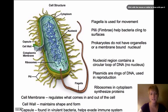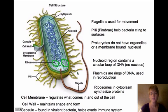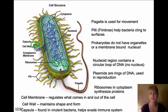Bacteria do have ribosomes — you can see these little dots right there. They do the same thing as in eukaryote cells: they produce proteins. The bacteria also has a cell membrane that regulates what comes in and out of the cell, just like in a eukaryote cell. It also has a cell wall — not necessarily the same kind as plants have, but it helps maintain the shape and form of the cell.